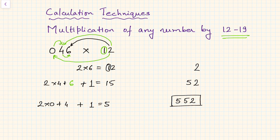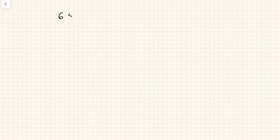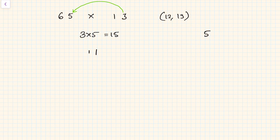Let us take another example. Observe closely what steps I am doing. Let's say I have 65 to be multiplied by 13. Again, 13 is between 12 and 19, so I can apply this method. First, take 3 and multiply by 5: 3 into 5 = 15. Write 5 here; carry is 1. Then add to it 3 times 6, plus 5: 3 into 6 plus 5 = 18 plus 6 = 24.